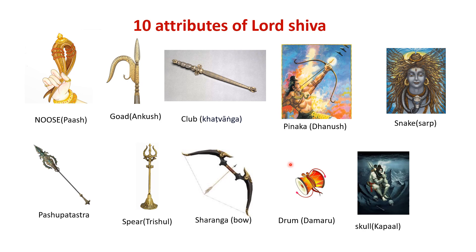As a picture with all 10 tools in his hands was difficult to find, you can see separately: Pasha, Ankusha, Katvanga, Pinaka (Dhanush), Sarpa (snake), Pashupatastra, Trishula (spear), Sharanga (bow), Damaru (drum), and Kapala. These are the 10 attributes of Lord Shiva.